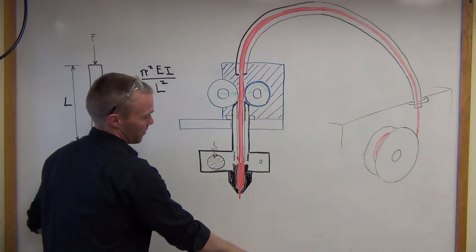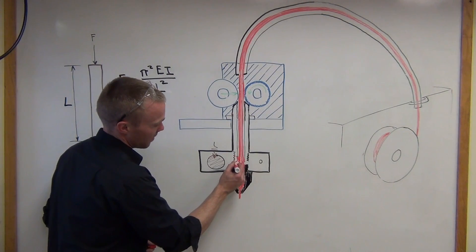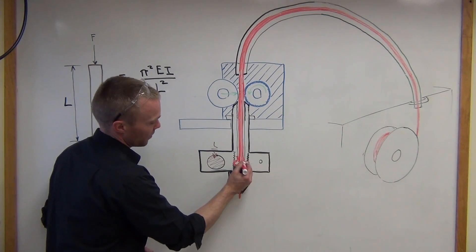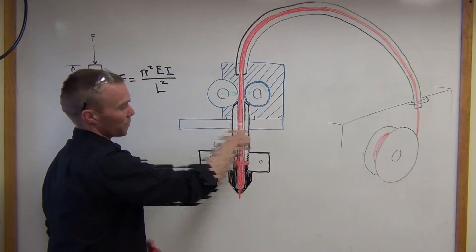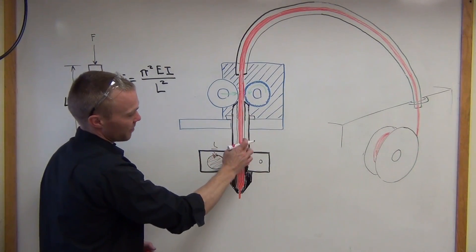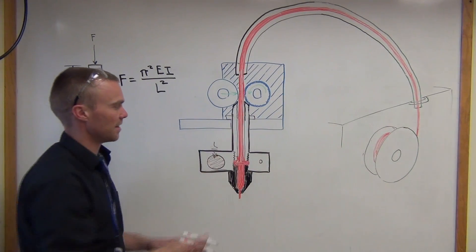When you go to retract, you'll be pulling that material back up. If there are any steps or roughness in that barrel, that bulb can cause problems with your print.